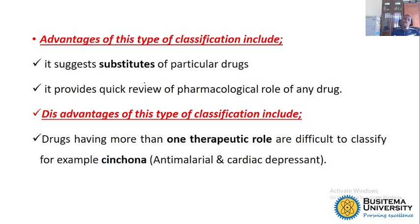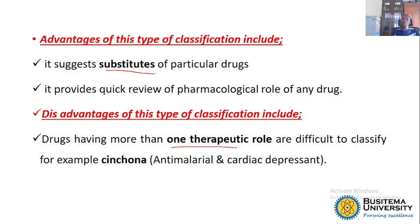The advantage of pharmacological classification is that it gives us substitutes. For example, if you know one antimalarial is quinine, you could go for substitutes like Artemisia, which comes from the sweet wormwood plant. The disadvantage is that some drugs have more than one role, so a particular drug can appear in multiple groups.